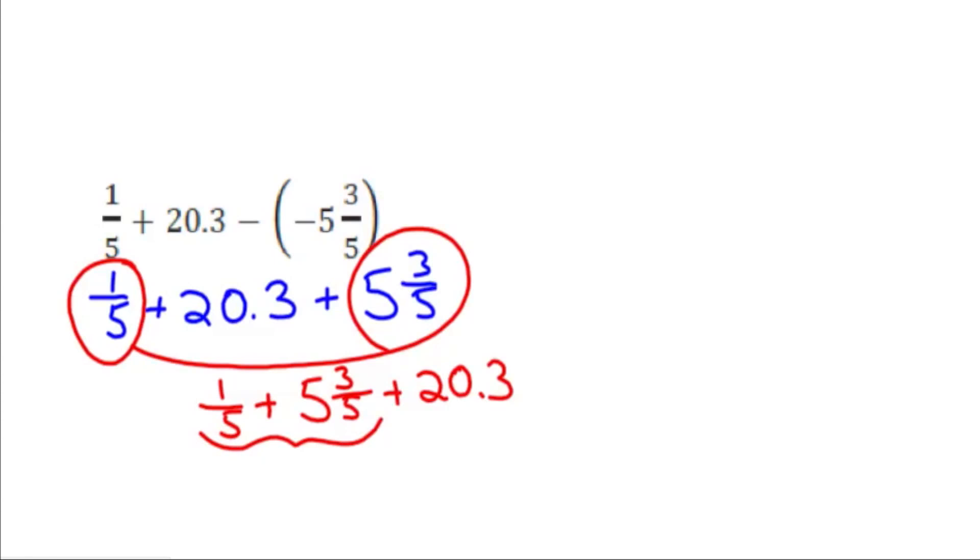Well the 1 fifth plus the 5 and 3 fifths, our whole numbers will add to 5 and the 1 fifth plus the 3 fifths will be 4 fifths. So for that part we have 5 and 4 fifths, and then let's add on 20.3.